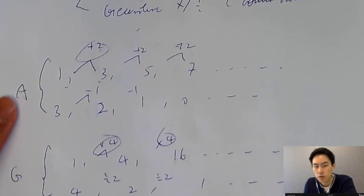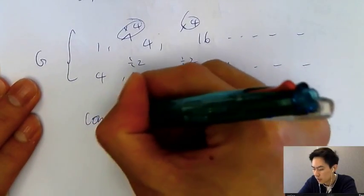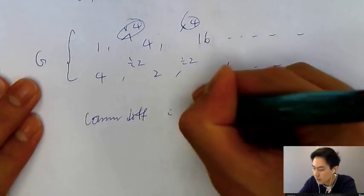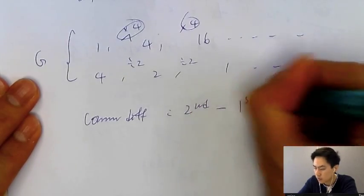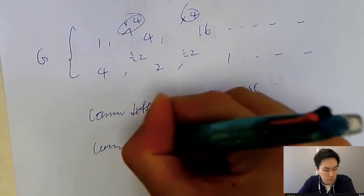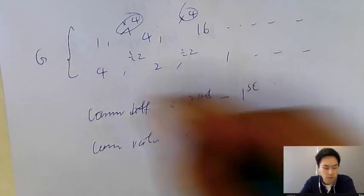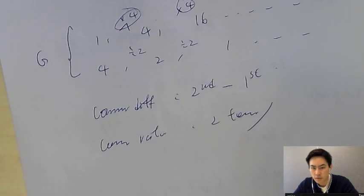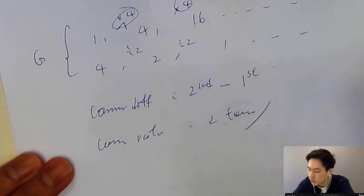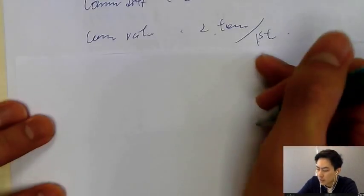One key thing you need to know: if I ask you to calculate the common difference, it's always the second term minus the first term. For the common ratio, it will always be the second term divided by the first term. Always remember, it's always like this. Let me give you an example.